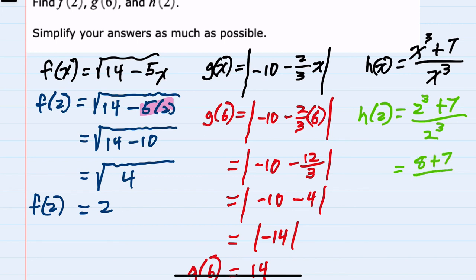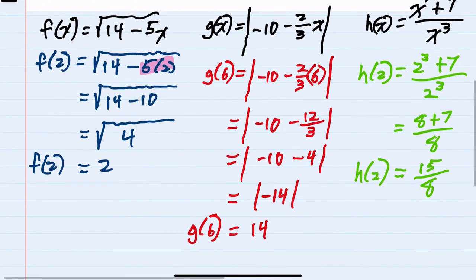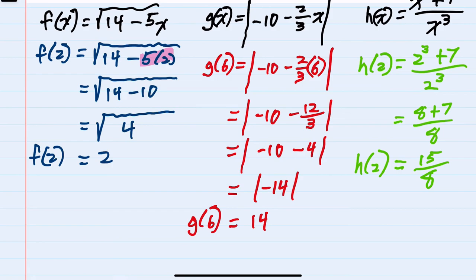The denominator, 2 cubed is again 8. This simplifies to 15 over 8. So h of 2 is 15 over 8. We have found each of these function values.